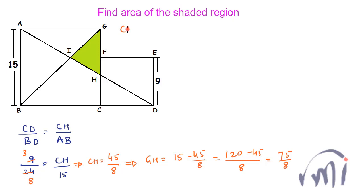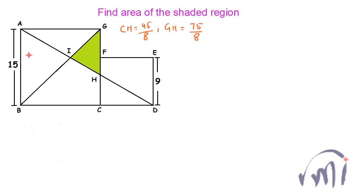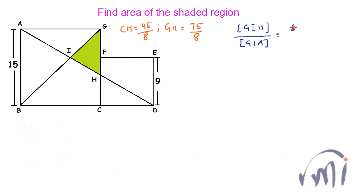So CH equals 45/8 and GH equals 75/8. Now, triangles GIH and GIA both have the same height — the perpendicular from point G to line AH — so the ratio of their areas equals the ratio of their bases, IH to IA. This line GB is actually the diagonal of square AGCB.